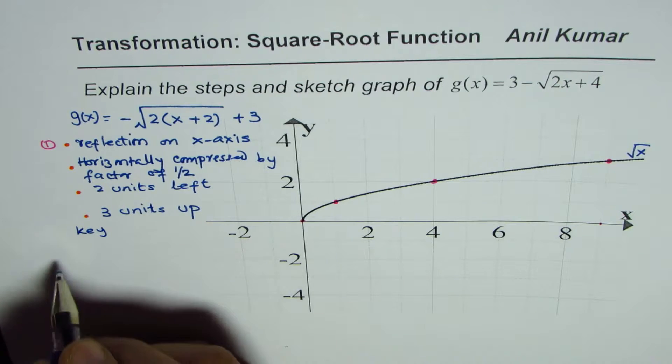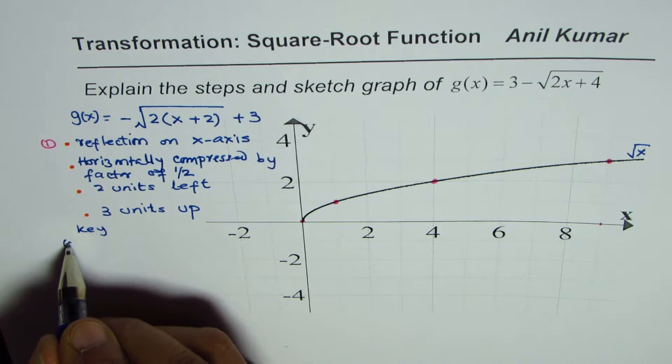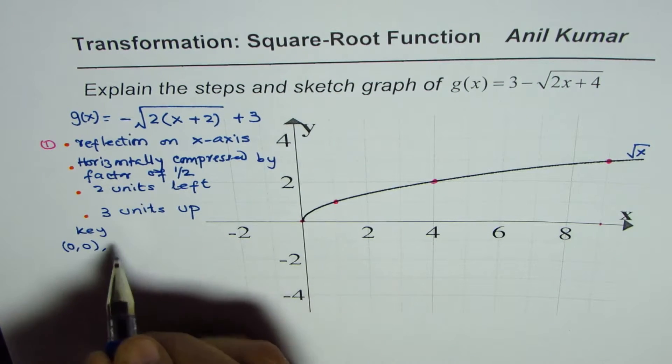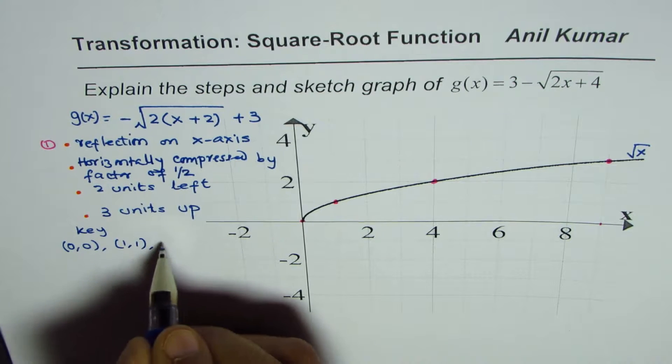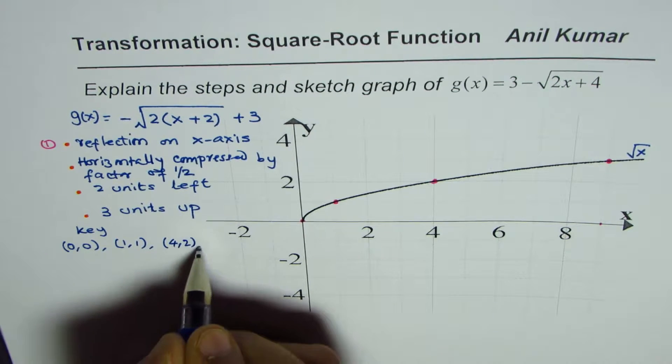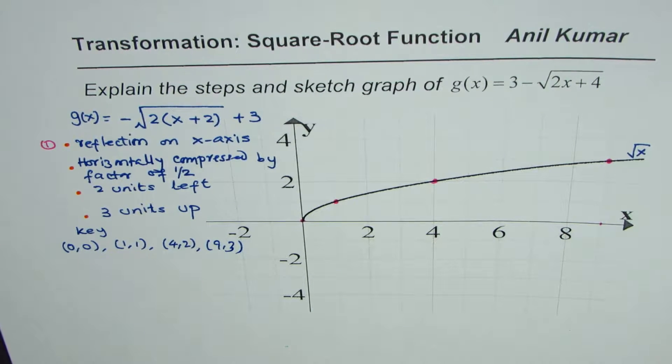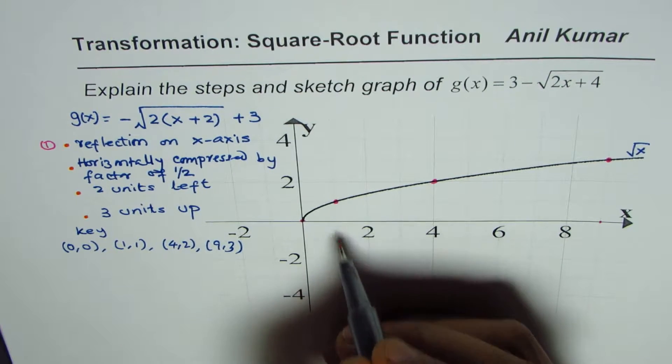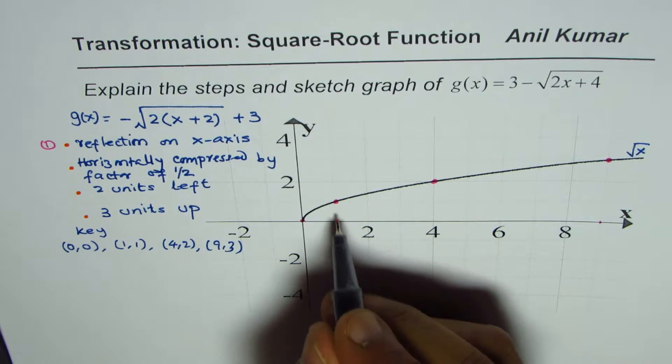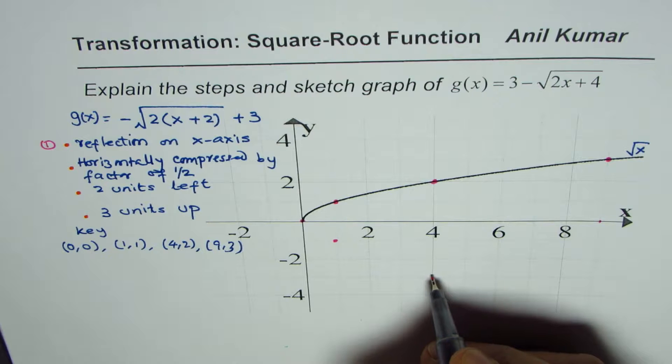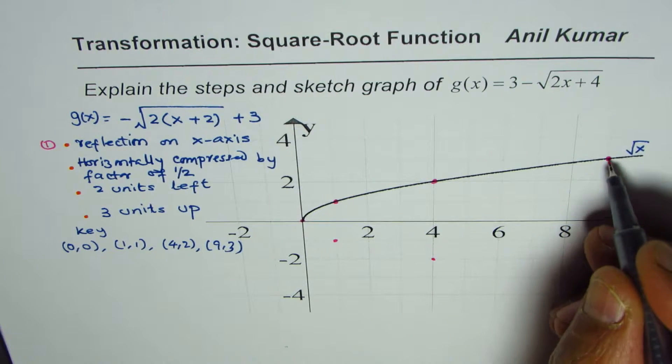So the key points are (0,0), and then we have (1,1), (4, square root is 2), and (9, square root is 3). So these are the key points with which we will work. If you are reflecting them, x value remains same, y value changes to negative. So we get this graph here, this comes to minus 3.